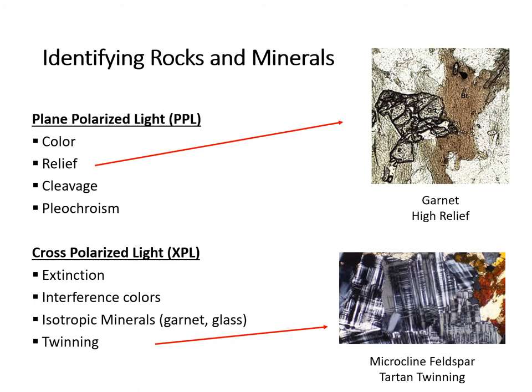There are a few ways to identify rocks and minerals in thin section, and they are different for plain polarized light and cross polarized light. For example, in the upper image, you can see a garnet that looks like it is sitting on top of the other minerals. This is because garnet has very high relief, which helps analysts to identify it. In the lower image, you can see an example of twinning in cross polarized light called tartan twinning, because it resembles Scottish pattern cloth.